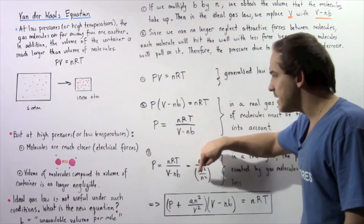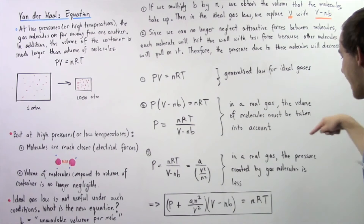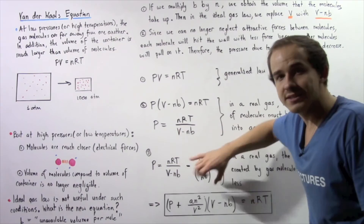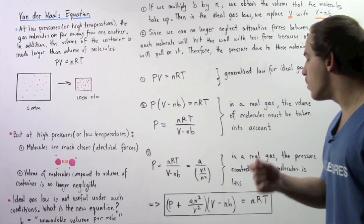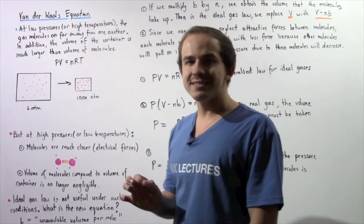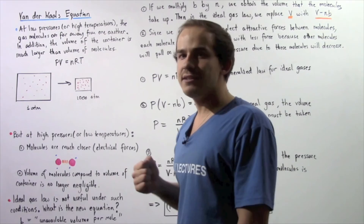Here, a is a constant that depends on the type of gas, V is the volume, and n is the number of moles. Rearranging this equation gives the final form of Van der Waals' equation: (P + an²/V²)(V − nB) = nRT. Under certain conditions — specifically high pressure or low temperature — we cannot use the ideal gas law to describe gas behavior, and must instead use Van der Waals' equation for real gases.